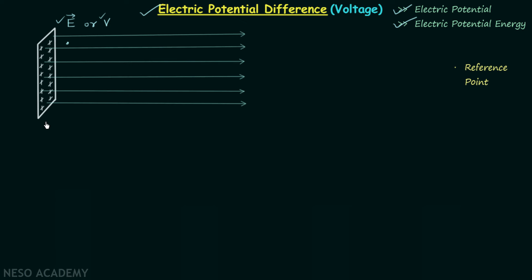Apart from the plate, we have taken one reference point, which is usually located at infinity. The influence of the electric field will be higher near the plate, and as we move away the influence reduces. Therefore, at a point closer to the plate the electric field strength and electric potential will be higher, and at a farther point they will be lower. The reference point is at infinite distance, so the electric field has zero influence there.